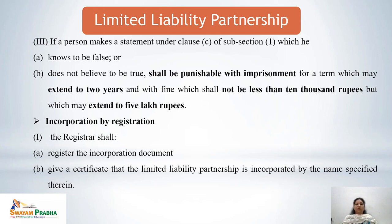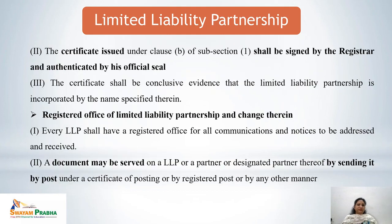On incorporation by registration, the Registrar shall register the incorporation document if submitted with prescribed fees and all formalities, and issue a certificate by the name specified in the incorporation document. The certificate shall be signed by the Registrar and authenticated by his official seal. It shall be conclusive evidence that the LLP is incorporated by the particular name specified therein.